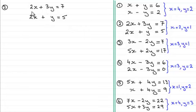So for 2x plus 3y equals 7 and 2x plus y equals 5, like any simultaneous equation I'd want to number these two equations say 1 and 2.